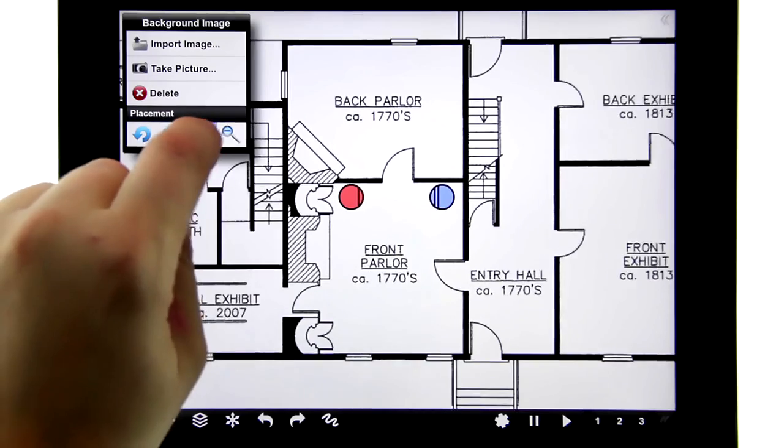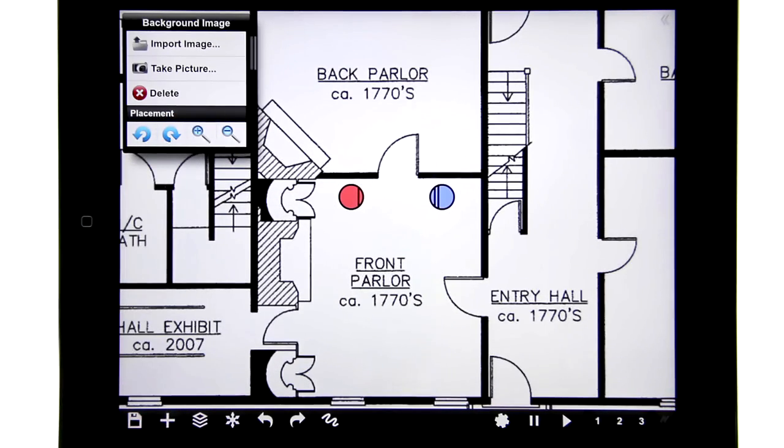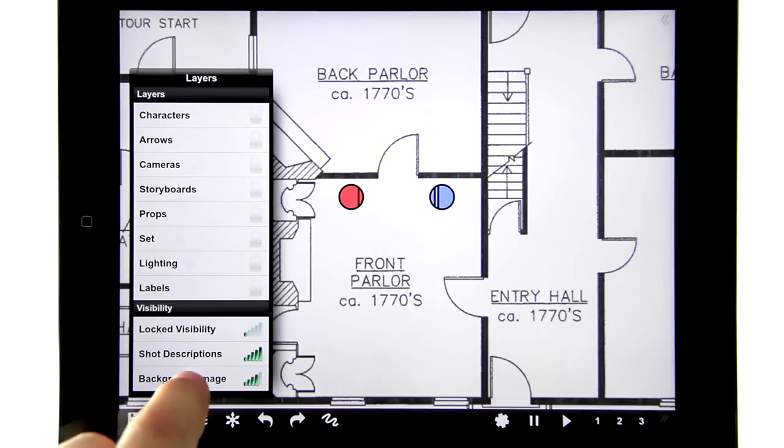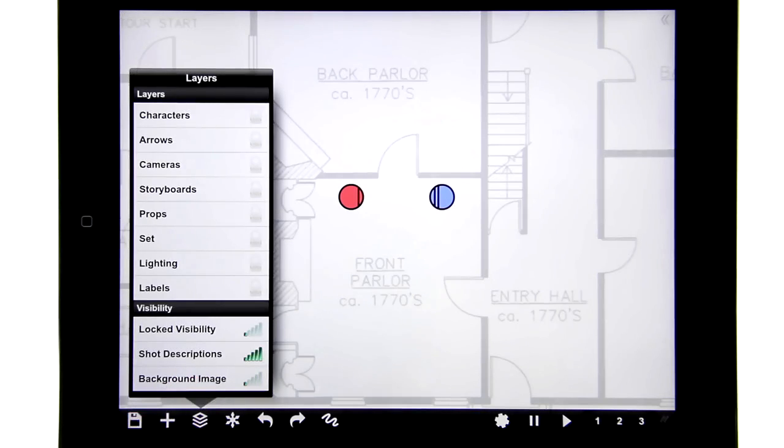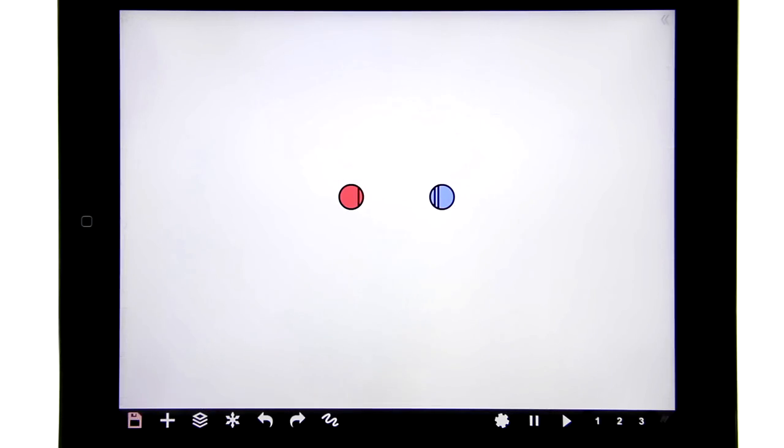Down here in the layers menu, you can then make the background more transparent, which you normally want to do. Okay, so back to the set designer—let's help these people get a room.